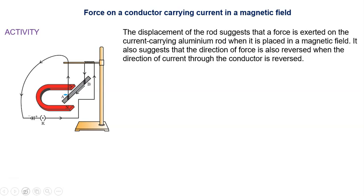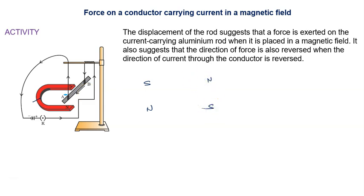Also, if we reverse the polarity of the horseshoe magnet — upper side north pole, lower side south pole — we observe that the direction of the force also changes. This means the direction of force on the conductor depends on two factors: the current and the magnetic field.